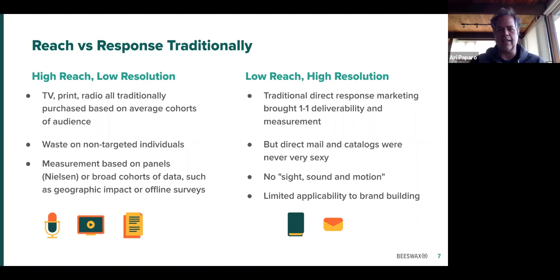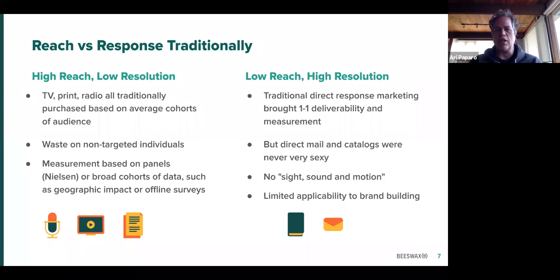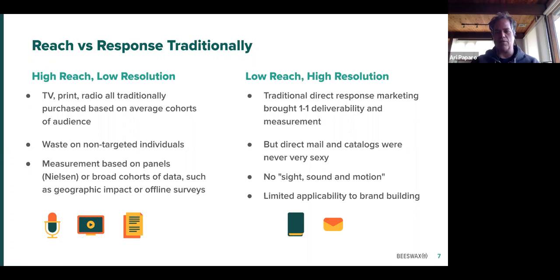Looking back traditionally at the history of media, you can kind of think of the world of media before the digital revolution as being sort of this bifurcation between high-reach, low-resolution media. So TV, print, and radio — these are all mass media, great ways to reach large groups of consumers, but it was not individualized. There was a lack of identity in these channels. And that meant that measurement was based on broad cohorts of data like Nielsen ratings, or geography, as ways of measuring the attribution of your ads to results.